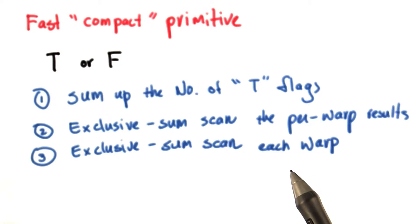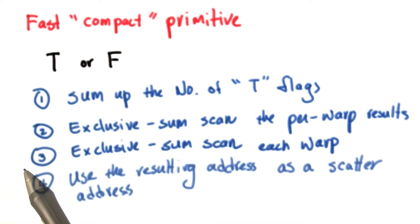with the starting value of each warp equal to the corresponding output in step two. For step four, we will use the resulting address as a scatter address into the output array for each thread for which the flag is true, and we will scatter the value into the output array.